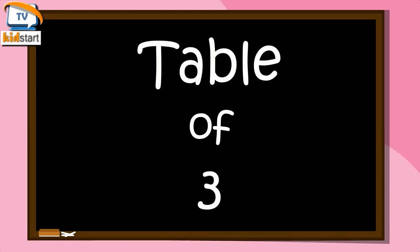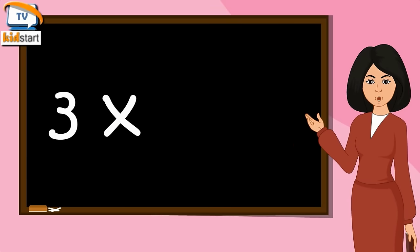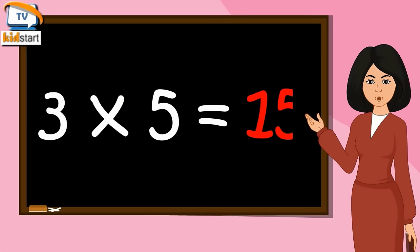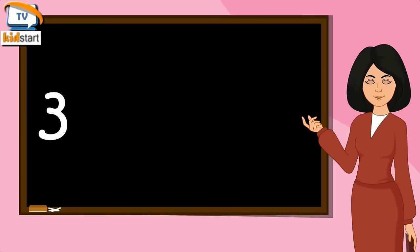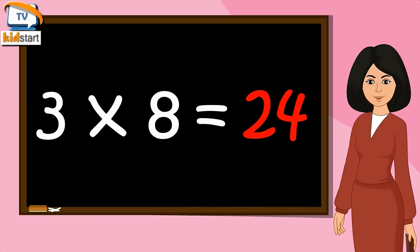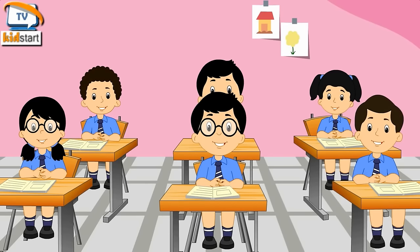Table of Three. Three sevens are twenty-one. Three eights are twenty-four. Three nines are twenty-seven. Three tens are thirty.